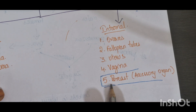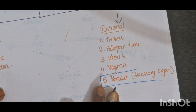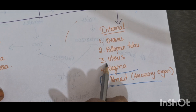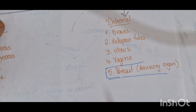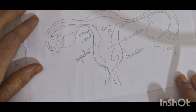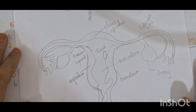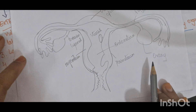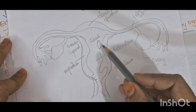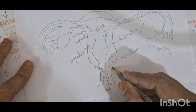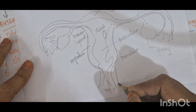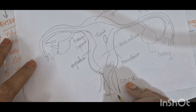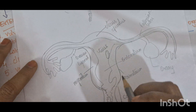Now we will see the internal organs. The internal organs consist of the ovaries, fallopian tubes, uterus, and vagina. This diagram shows how the uterus looks. This is the uterus, and this part is called the cervix, which attaches to the uterus.